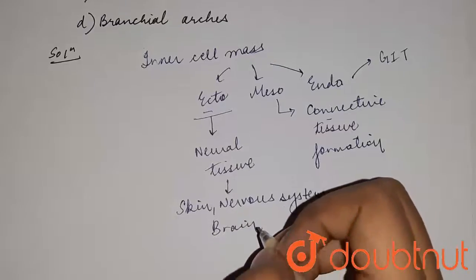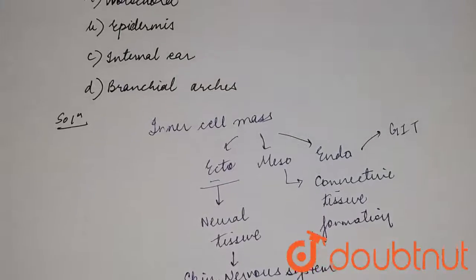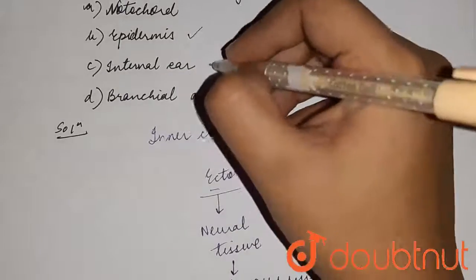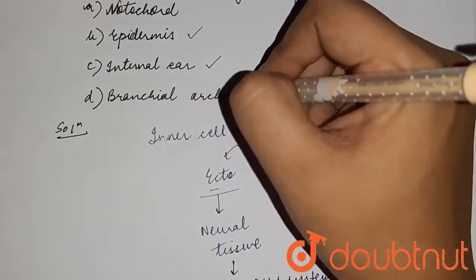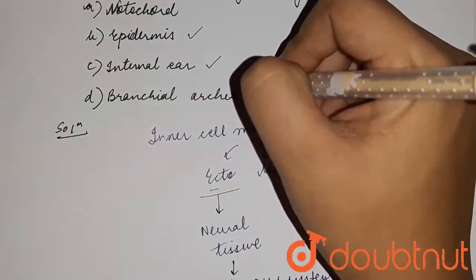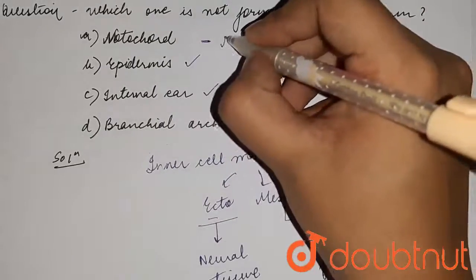not formed from ectoderm, is the answer. Epidermis is the skin. Internal ear comes under the nervous system and brain. Bronchial arches are also formed from the ectoderm. So notochord actually arises from